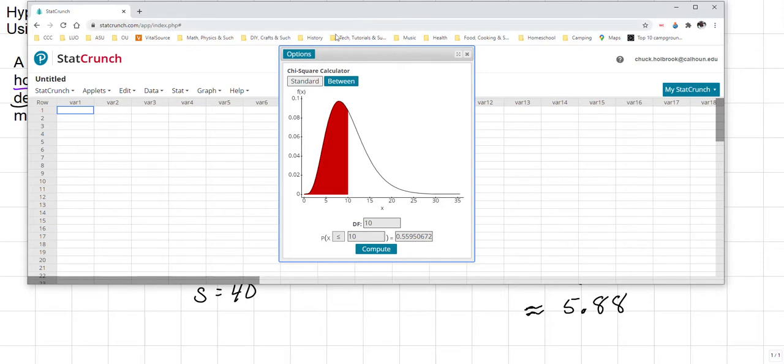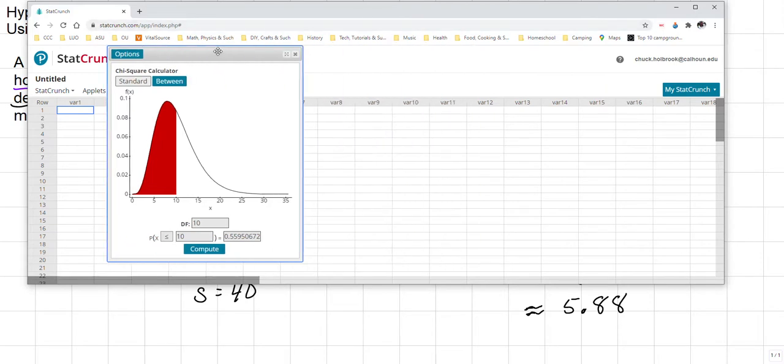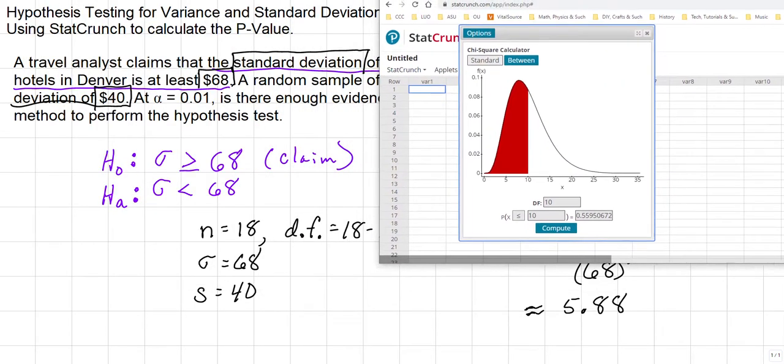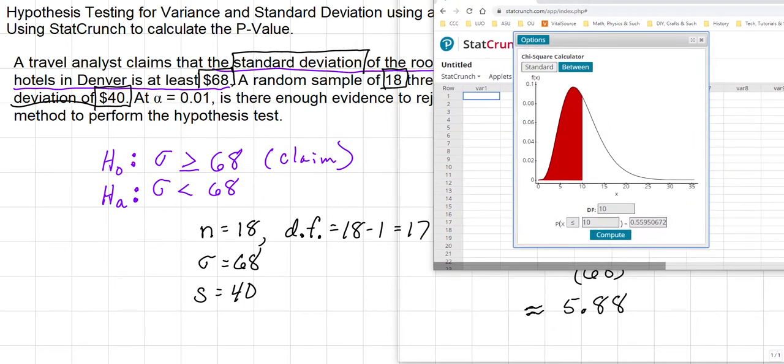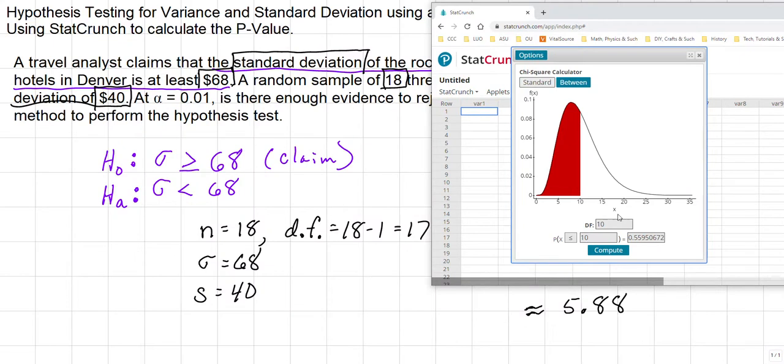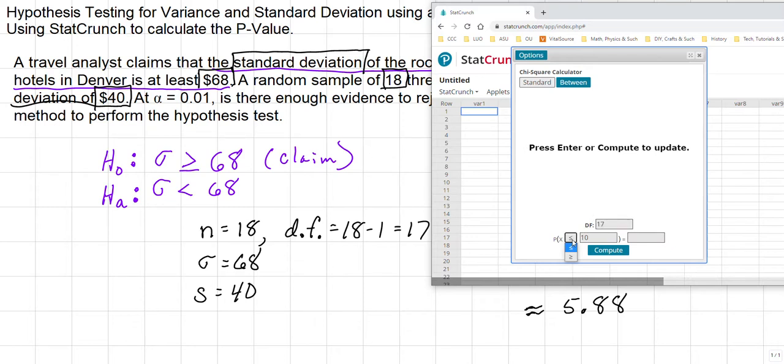What we need to do is take our information that we've calculated, and you'll notice in this, there we go, we're given a space for degrees of freedom, which in this case is 17. So we type that in. Now, we can adjust this to a left-tailed or right-tailed test. This is going to be a left-tailed test because we are looking at the alternate hypothesis of less than 68.